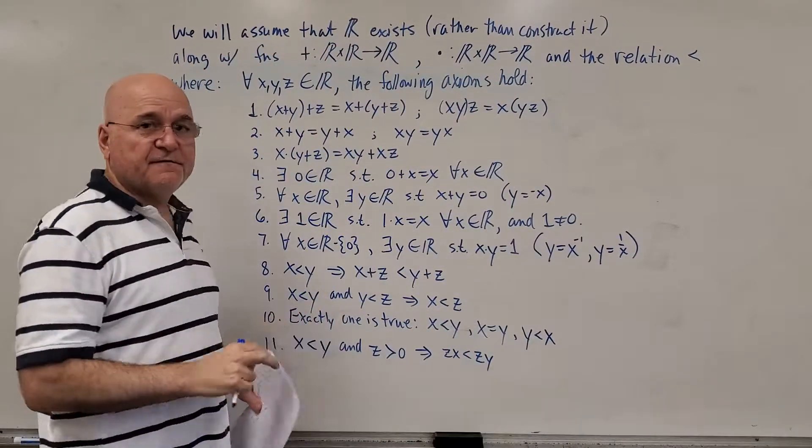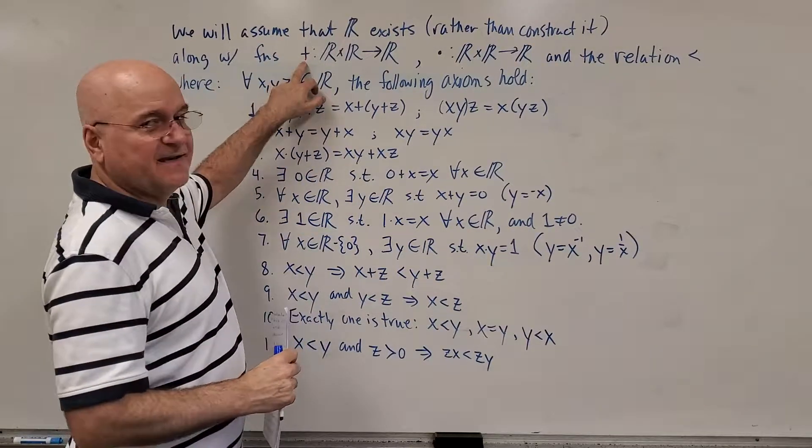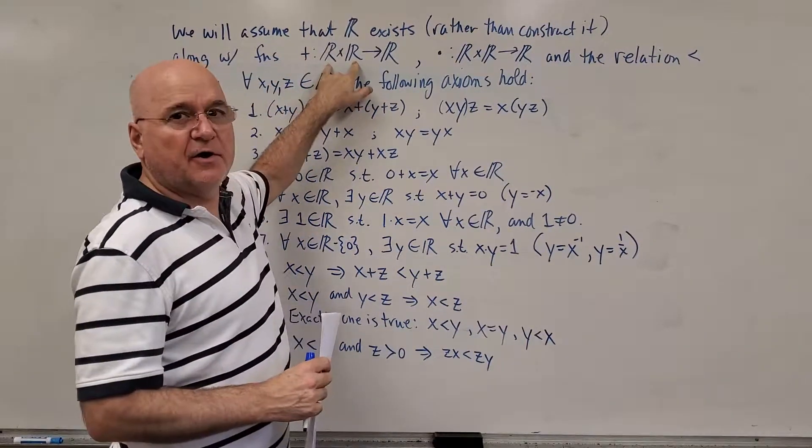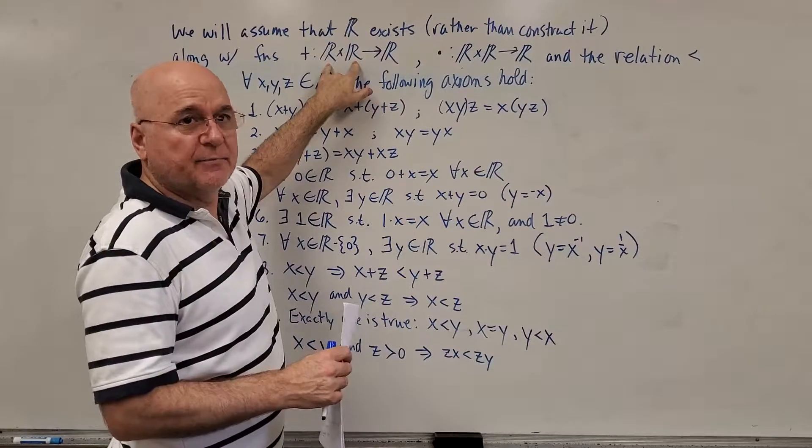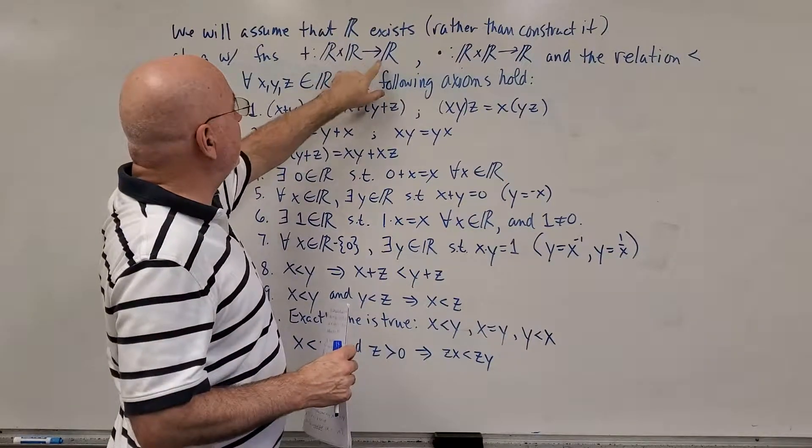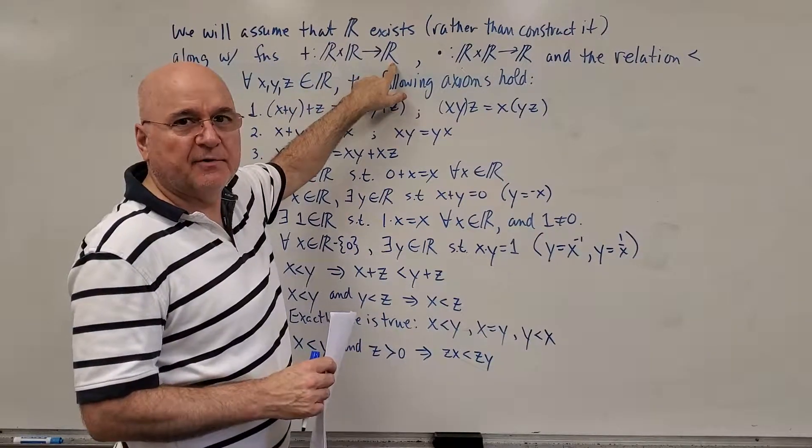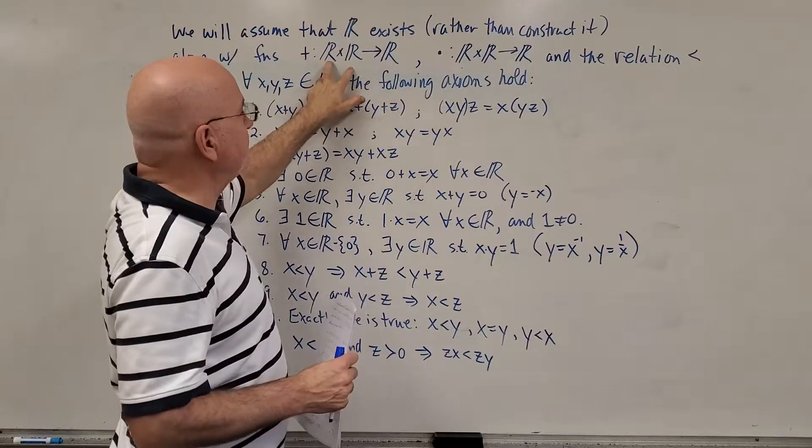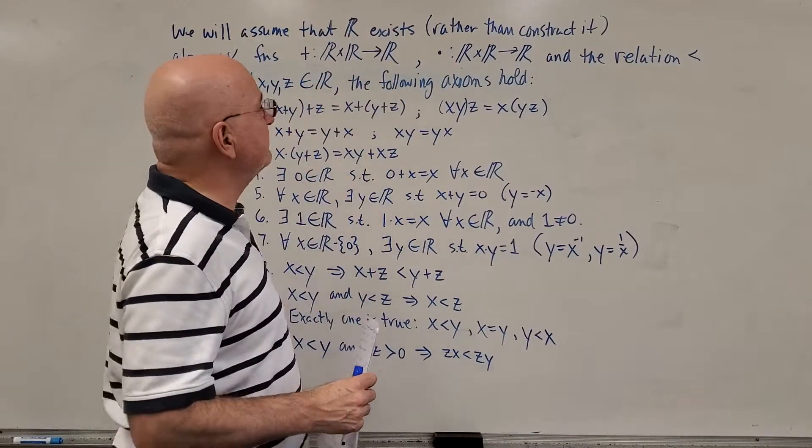Along with the function's addition, the plus sign, it takes R cross R, an ordered pair, two numbers, and maps it into a single number. And we know what happens. You take the two numbers, you add them, and you get this number.